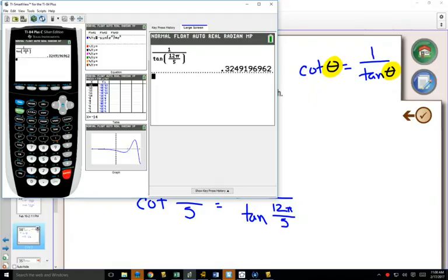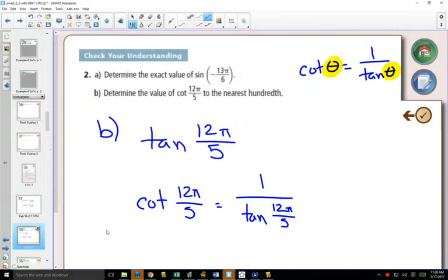Push enter, and we find it's equal to 0.324. So to the nearest hundredth, cotangent of 12π over 5 is 0.32.